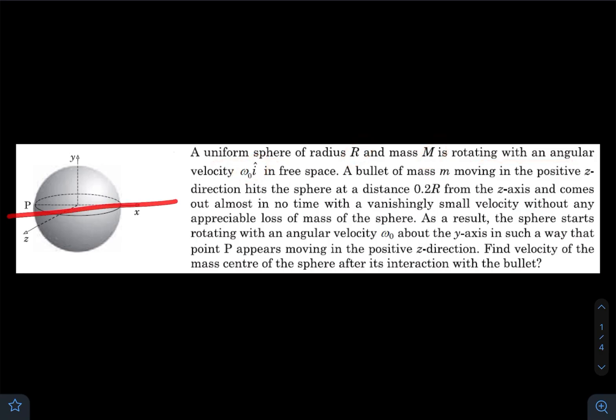A bullet of mass m moving in the positive z direction hits the sphere at a distance 0.2R from the z-axis. Now at a distance 0.2R from the z-axis can be in any orientation - they have not mentioned the plane or the actual coordinate of hitting the sphere.